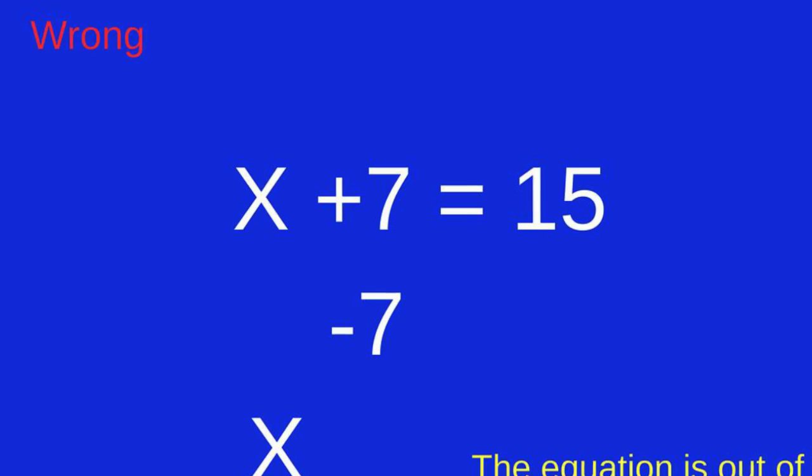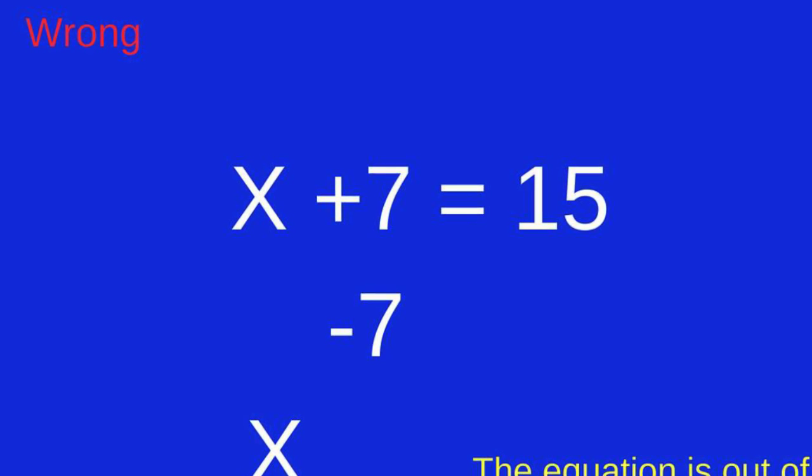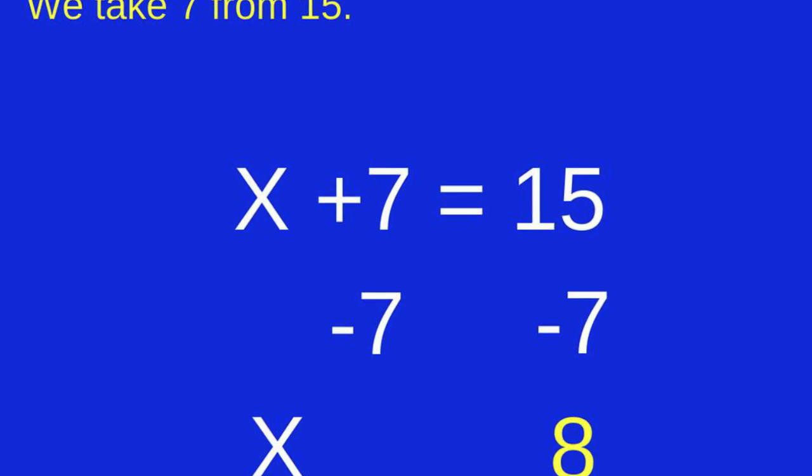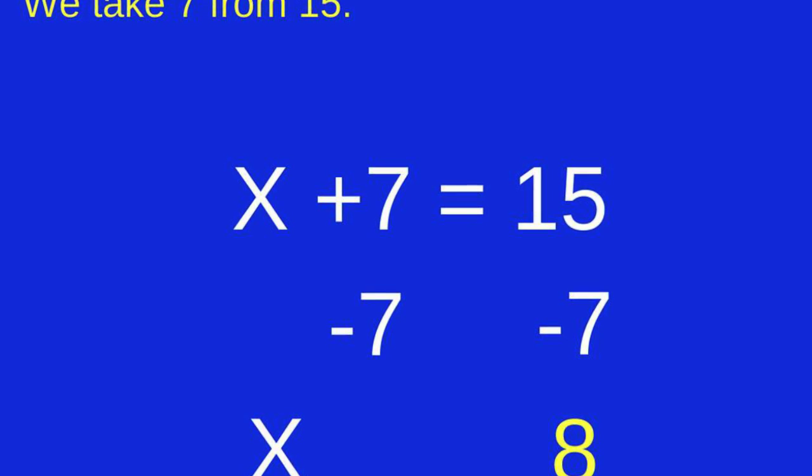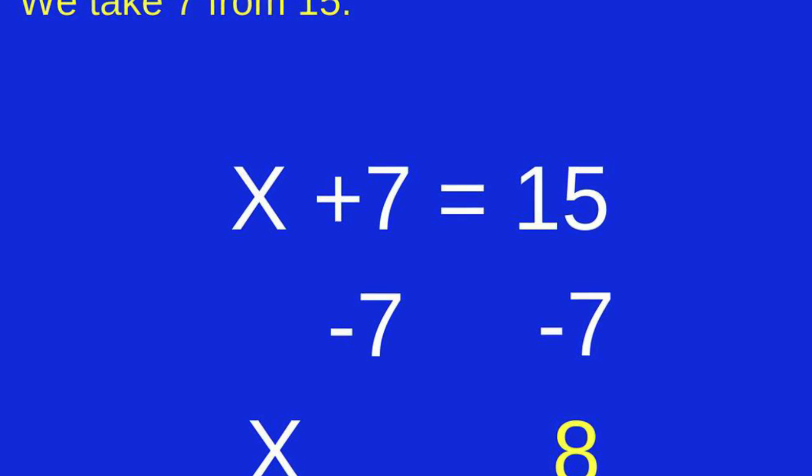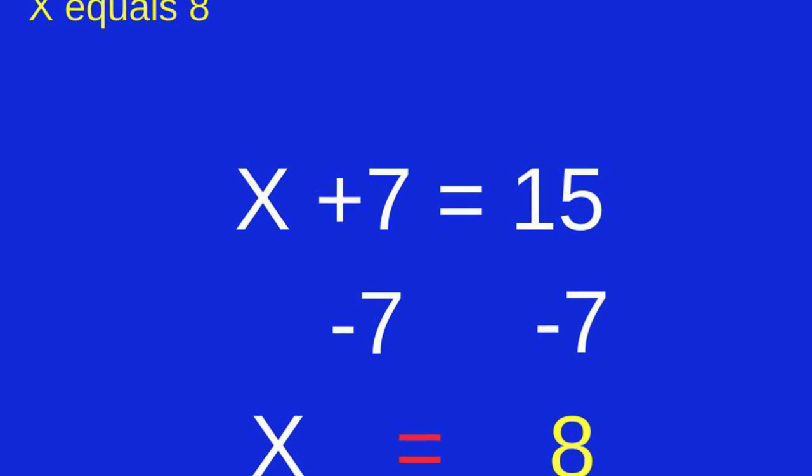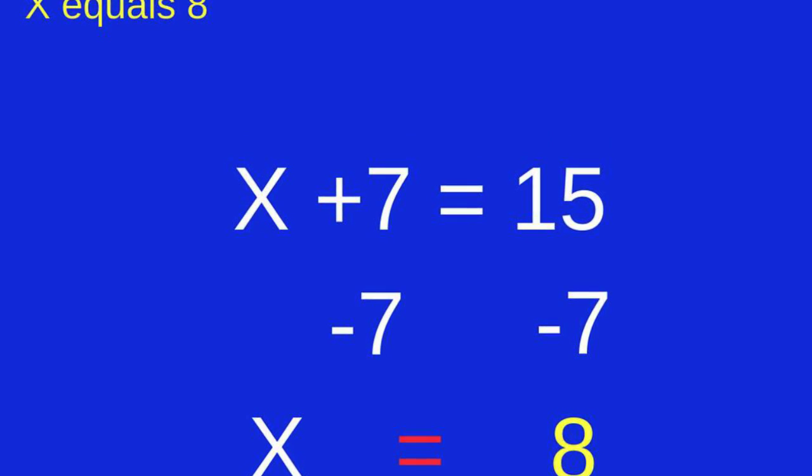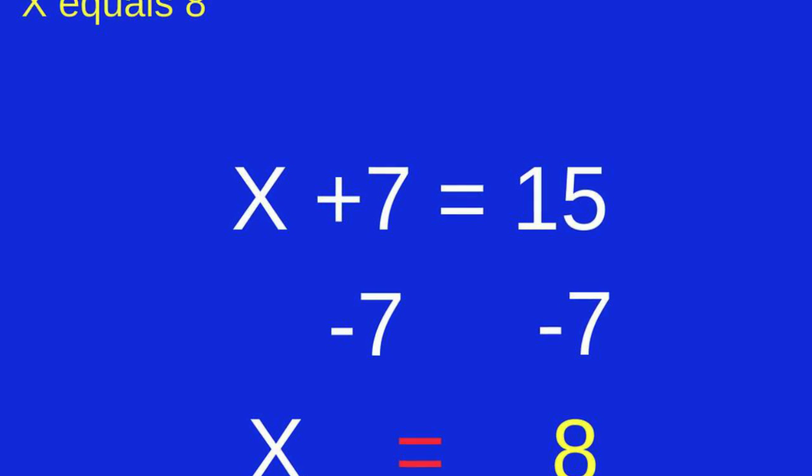Are we solved? No. The equation is out of balance. We have to subtract 7 on the other side in order to bring the equation back into balance. Once that is done, we can see that 15 minus 7 is 8. X equals 8.